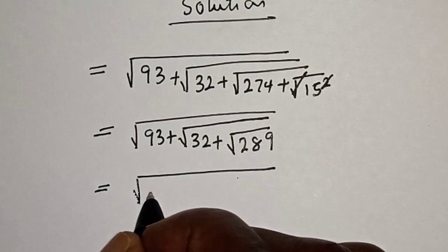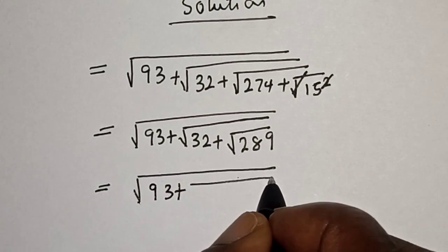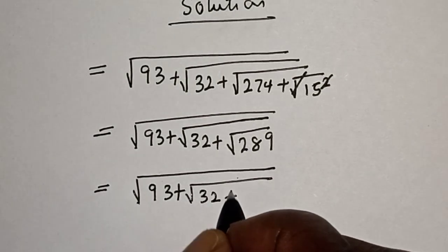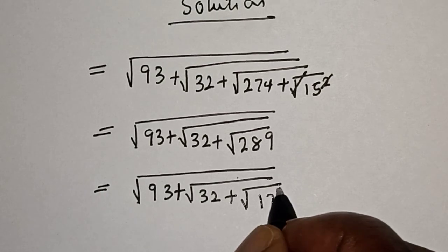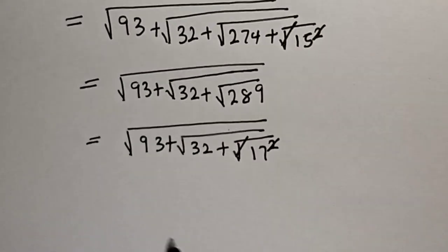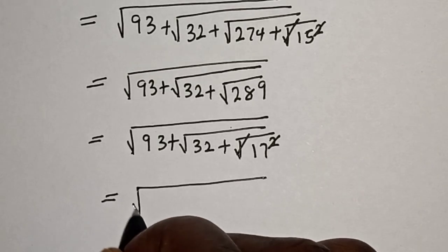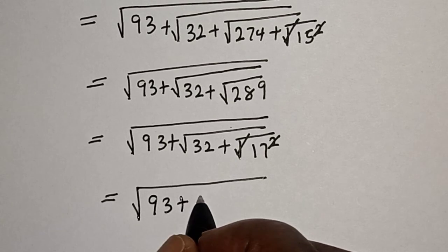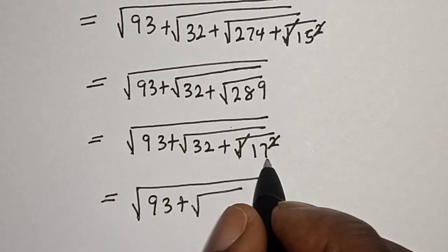Square root of 93 plus square root of 32 plus square root of 289 is 17. We square 17, so that cancels, and this is equal to square root of 93 plus square root of 32 plus 17.